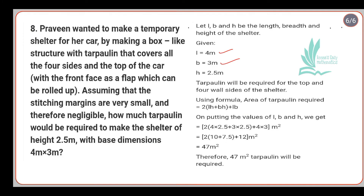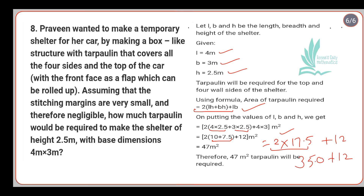Putting in length = 4 m, breadth = 3 m, and height = 2.5 m into the formula — you can take H common if you wish. Using BODMAS, multiplication comes before addition: 2 × 2.5 × (4 + 3) + (4 × 3) = 2 into 17.5 plus 12. This gives 35.0 + 12, and the final answer is 47 m².